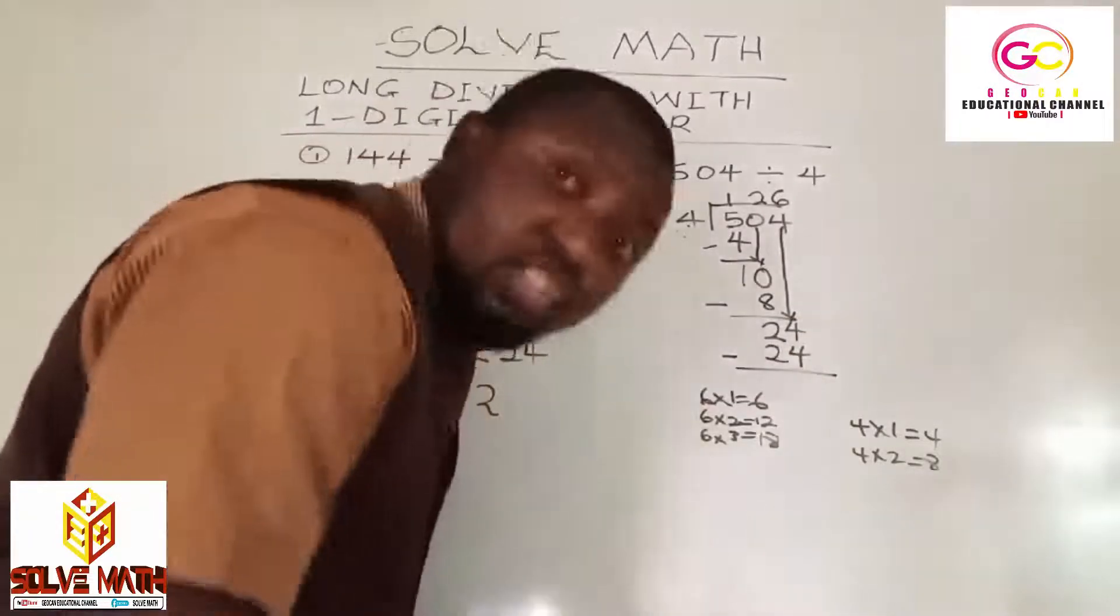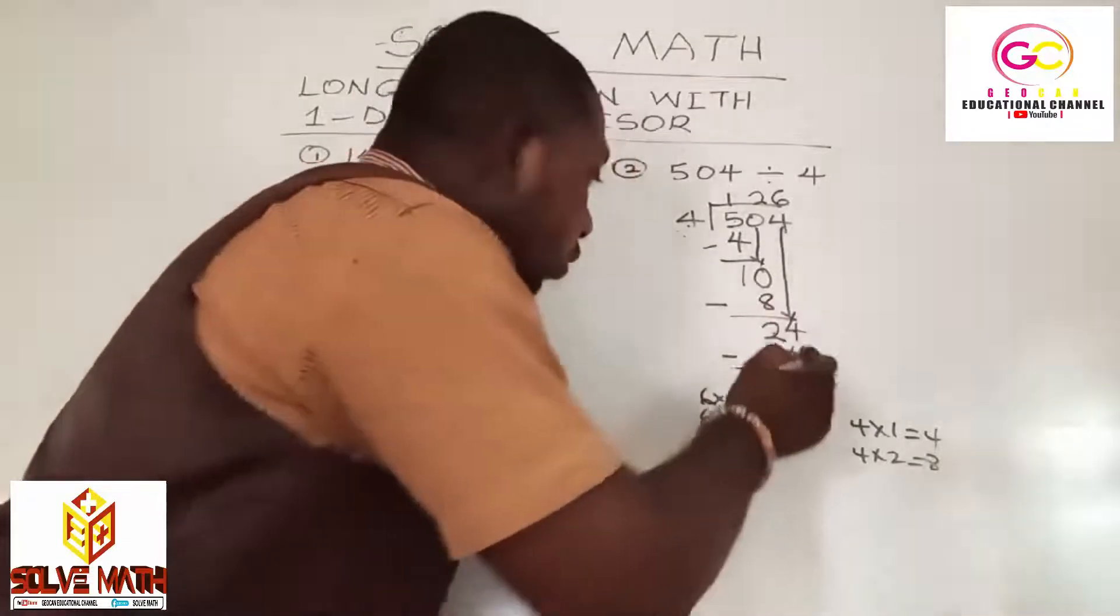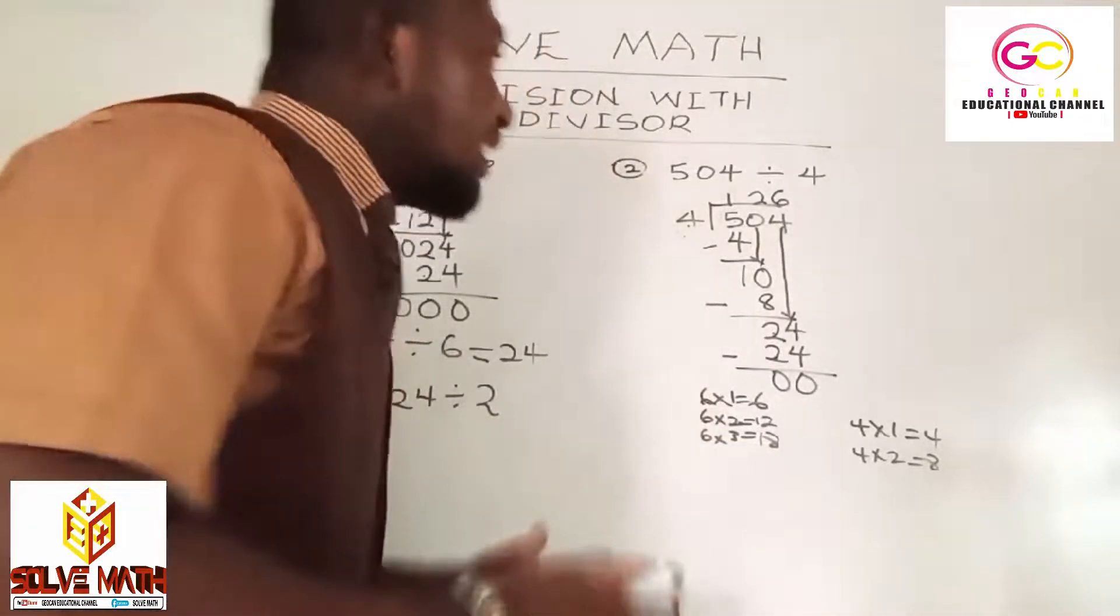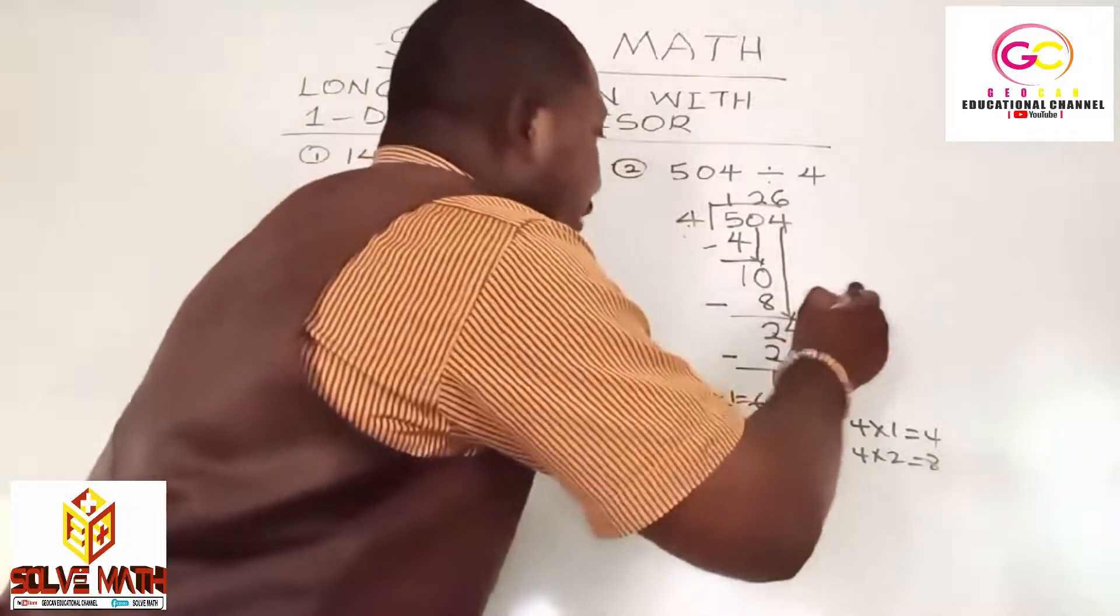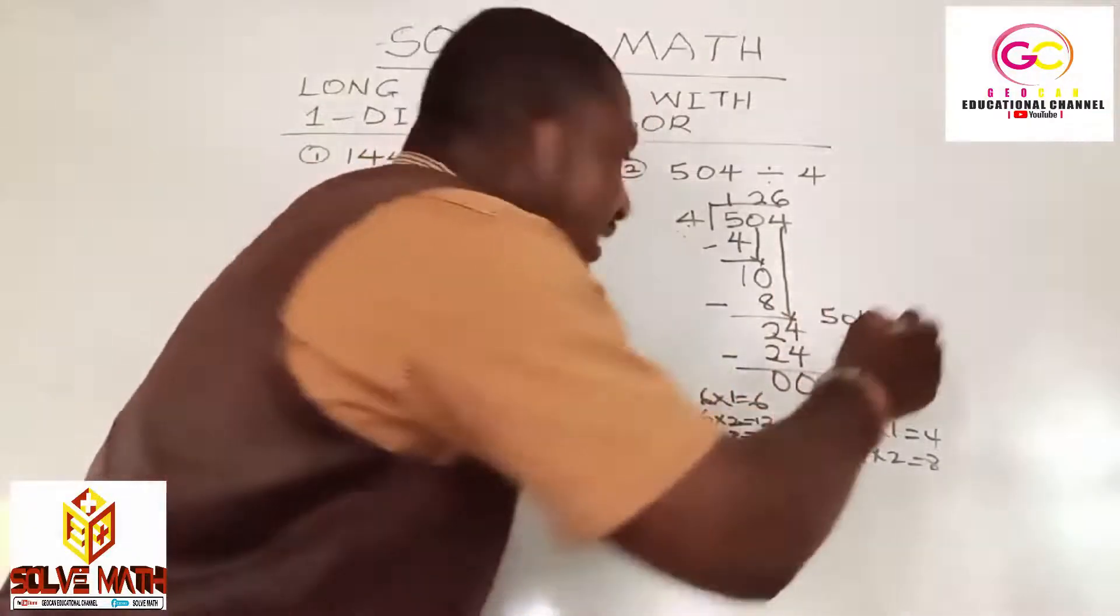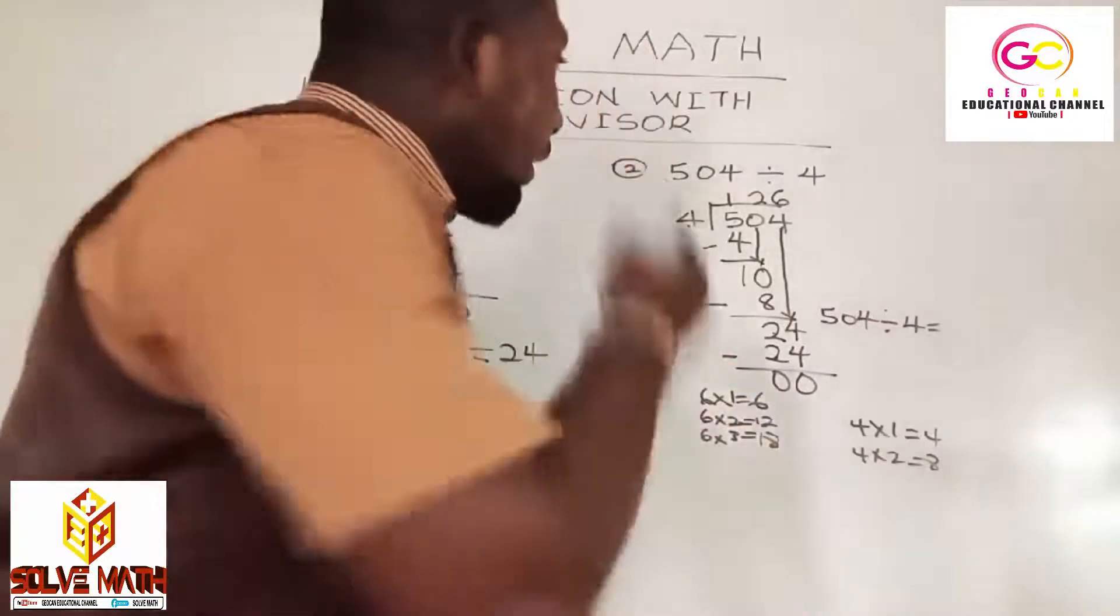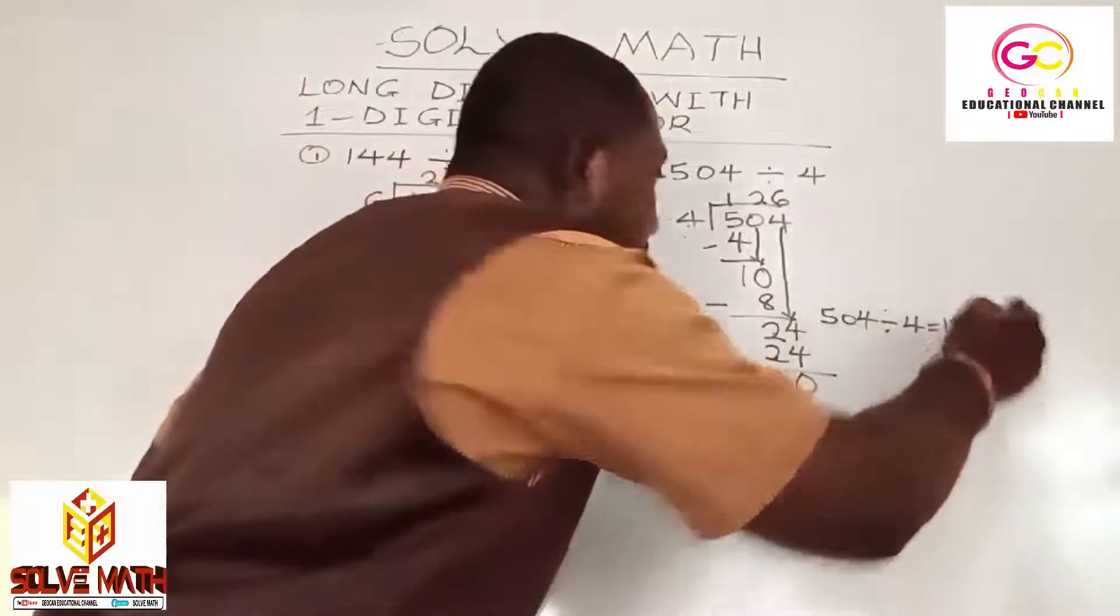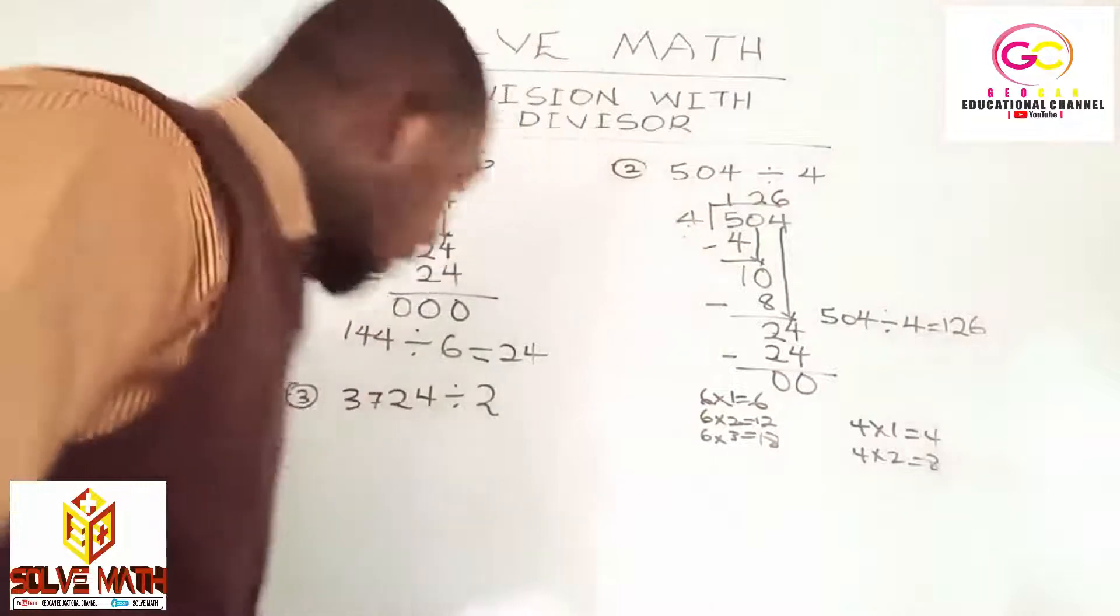Now we do your subtraction: 4 minus 4 is 0, 2 minus 2 is 0. Voila, you are done with it. What it simply means is that 504 divided by 4 will be equal to 126. That is what it means. Easy as ABCD.